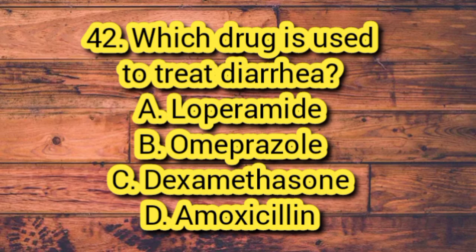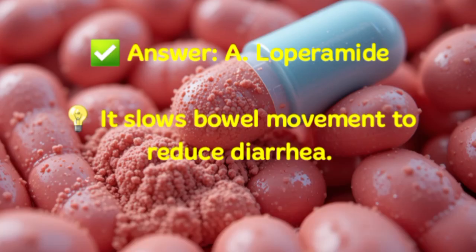Question 42. Which drug is used to treat diarrhea? A. Loperamide. B. Omeprazole. C. Dexamethasone. D. Amoxicillin. Answer: A. Loperamide. It slows bowel movement to reduce diarrhea.